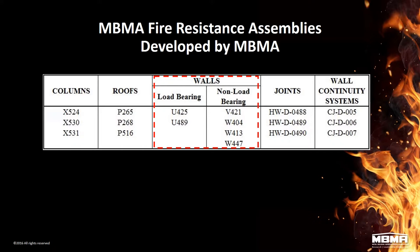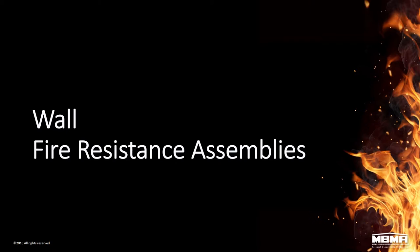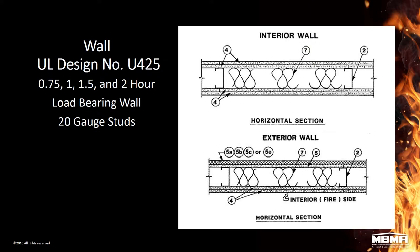In part five, as an introduction, we'll cover the joints — the final part of this series — both head of wall joints and wall continuity systems. Now let's get on with fire resistance walls. The very first one is U425. We actually just went through the actual listing online at the UL website, and here's a quick image of that assembly.